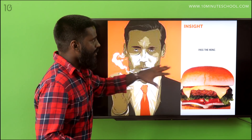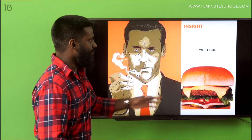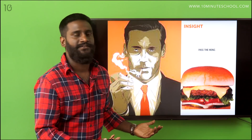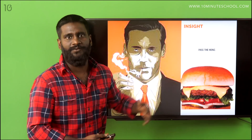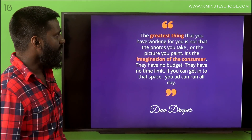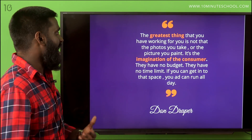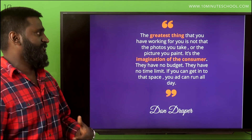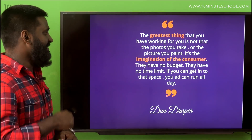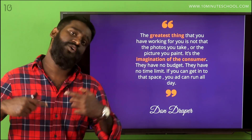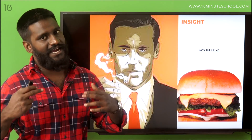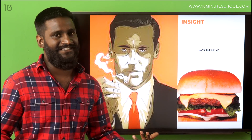Here is one of the greatest ads done by Don Draper — he's from Mad Men. The ad says 'Pass the Heinz,' but you don't even see a bottle of ketchup. What's the insight? He did it because of an insight: the greatest thing working for you is not the photos you take or the pictures you paint — it's the imagination of the consumer. They have no budget, no time limit. If you can get into that space, your ad can run all day. You're seeing a burger ad from McDonald's, but you're thinking Heinz. You're seeing french fries, but you're thinking Heinz.